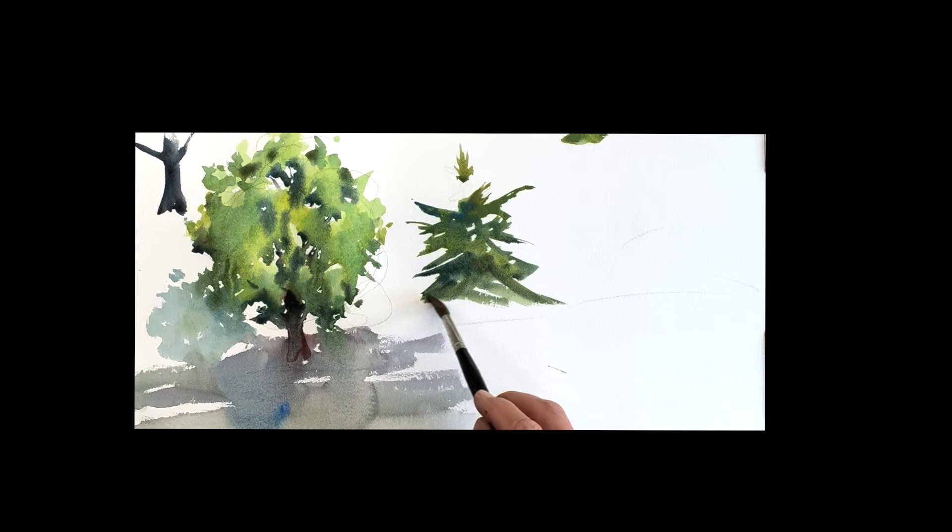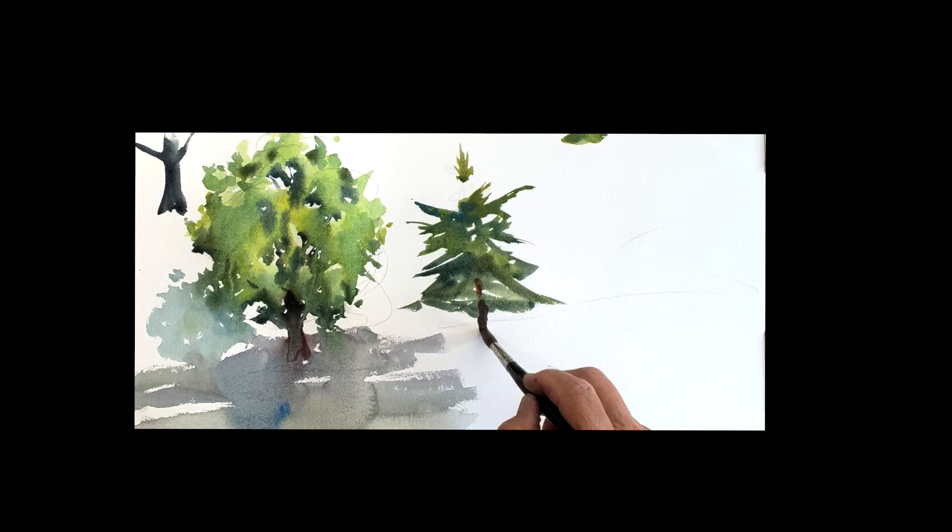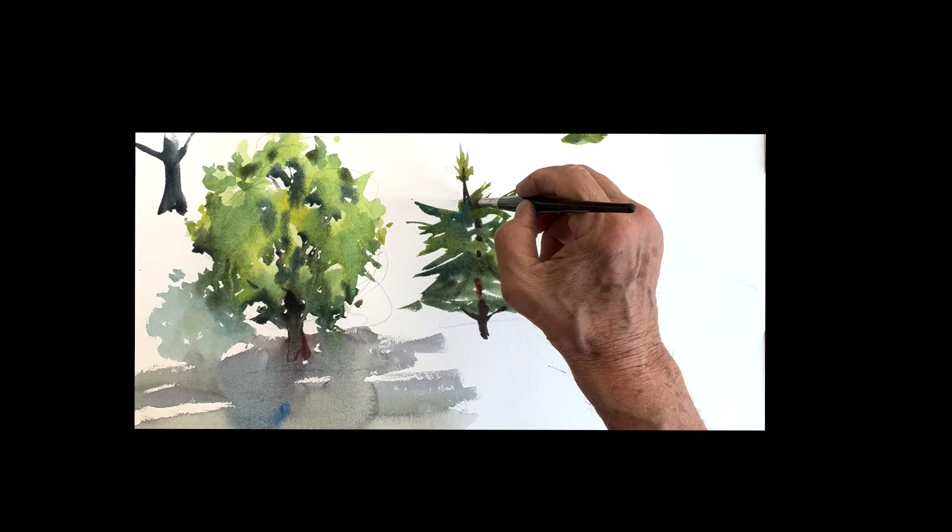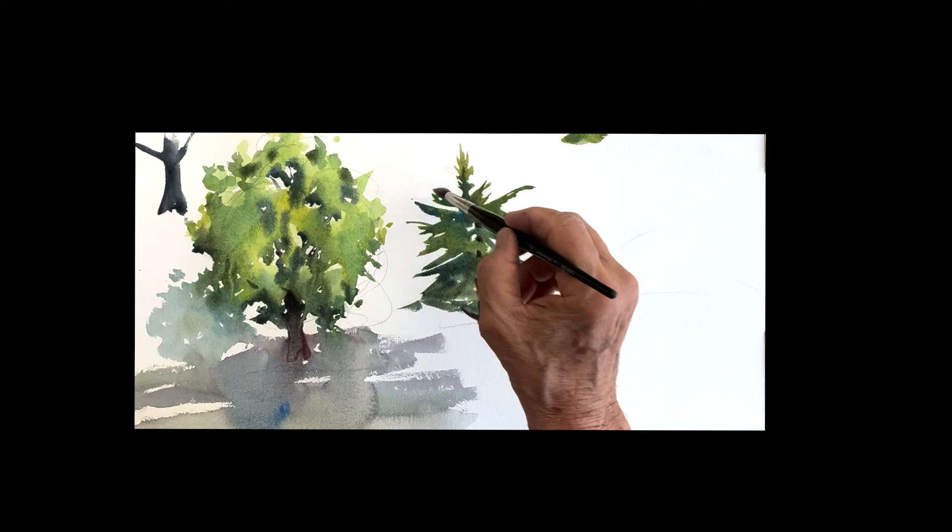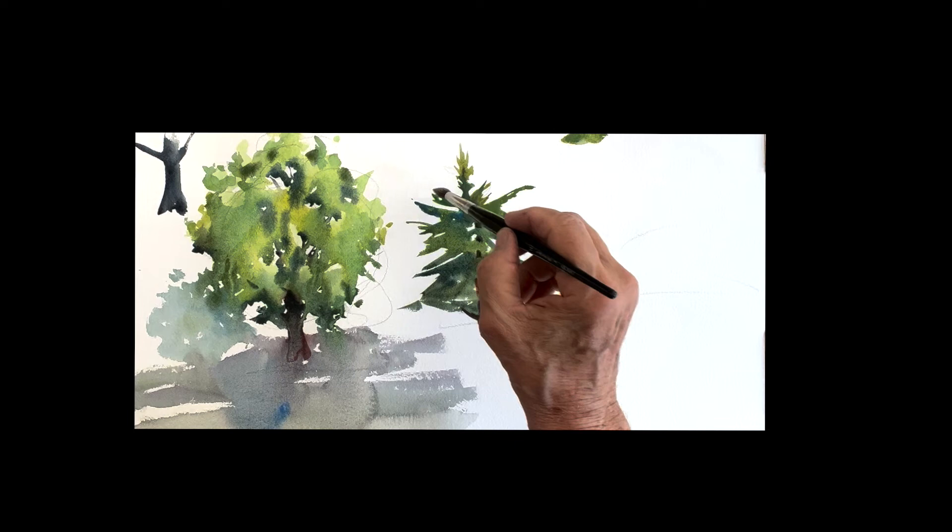All right. So I'm adding that trunk, a little quinacridone sienna, mixing it, just mixing it with the greens so you get that basic kind of Christmas tree look to it. All right. And you can work these edges and some darks. And then have fun with it.